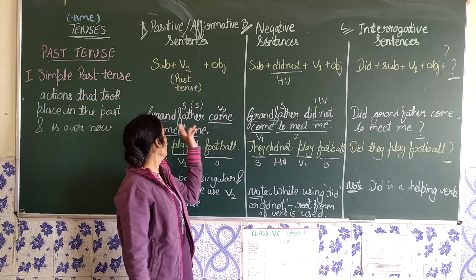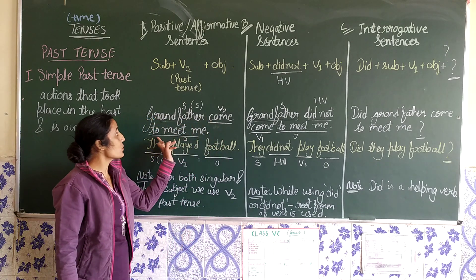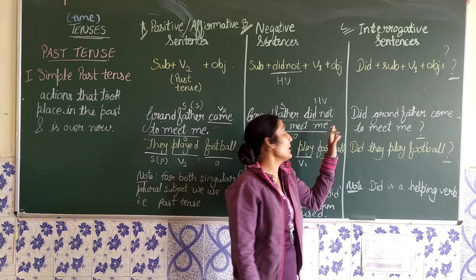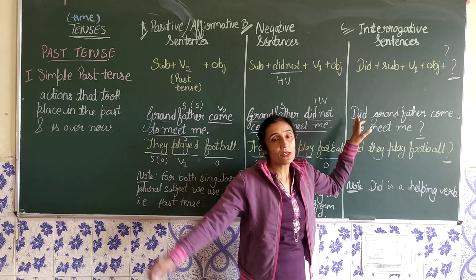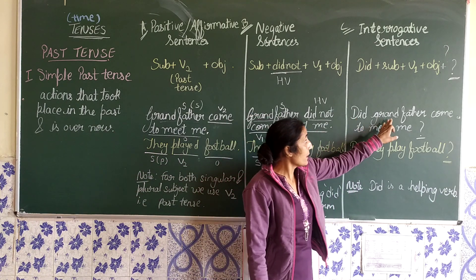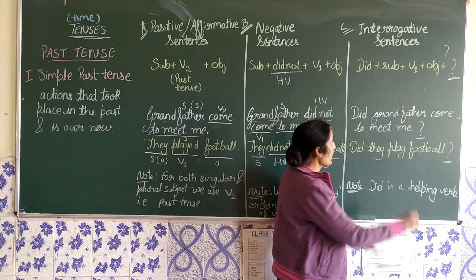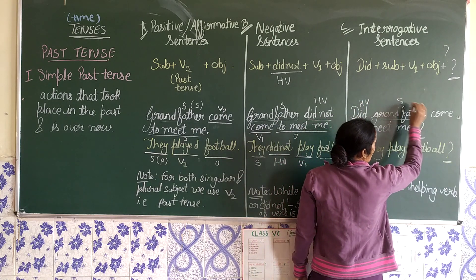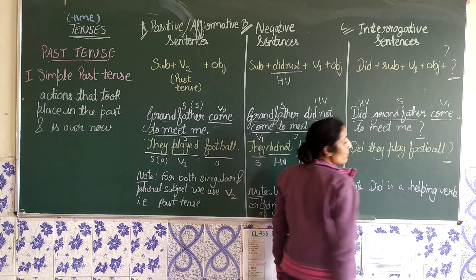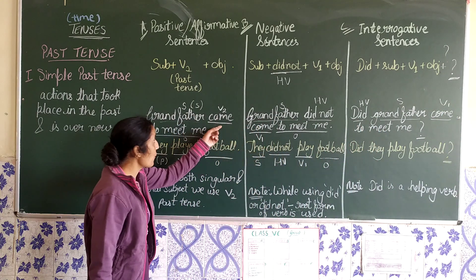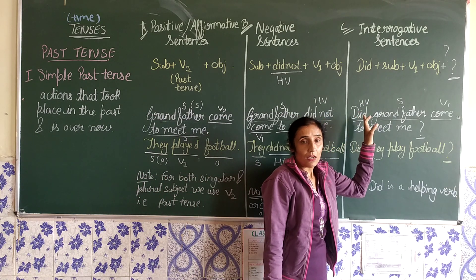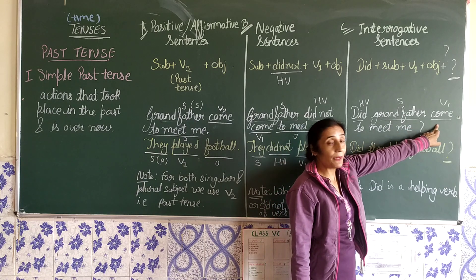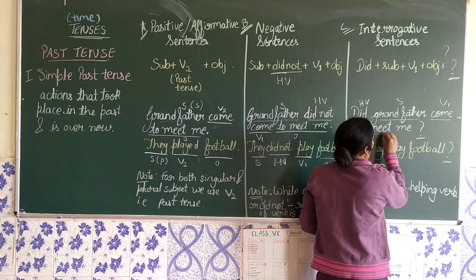Let's understand this with the same example: 'Grandfather came to meet me.' To convert to interrogative, first we use the helping verb 'did', then 'grandfather' is the subject, then the verb in its first form — it was 'came' as the second form, but when we are making an interrogative sentence, it becomes 'come' — then 'to meet me' is the object.